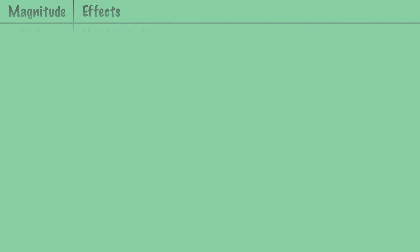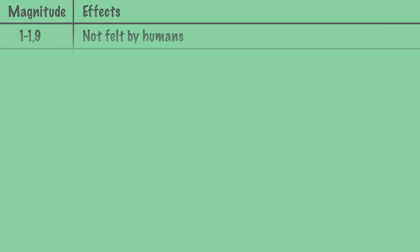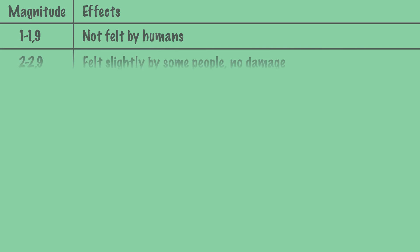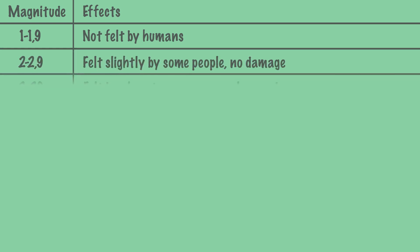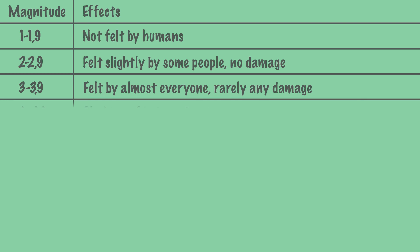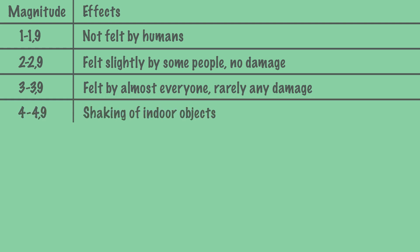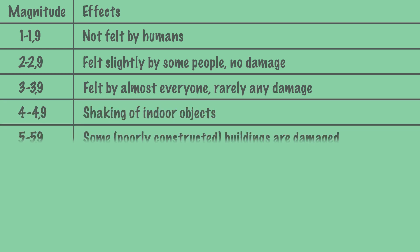An earthquake with magnitude 1 on the Richter scale is not felt by humans and will cause little or no damage. Only at a magnitude of 3 do many people feel that there is an earthquake. An earthquake with a magnitude of 5 is one of the strongest earthquakes to have occurred in the Netherlands, in Roermont in 1992.